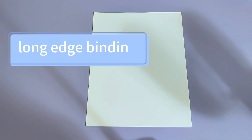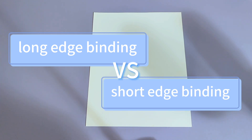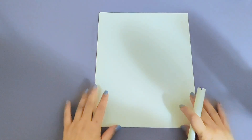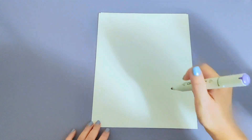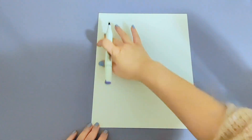In this video I will explain the difference between long edge binding, also known as flip on the long side, and short edge binding, also known as flip on the short side. First, let's take a look at a piece of paper. On the piece of paper we have four sides, but there are two types.